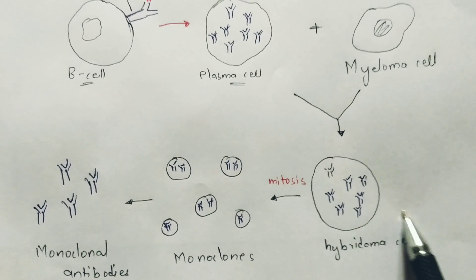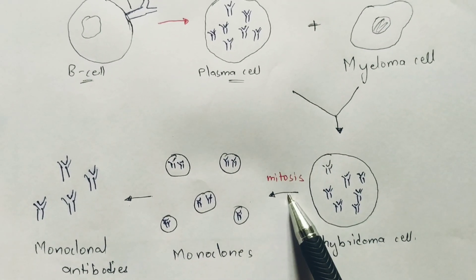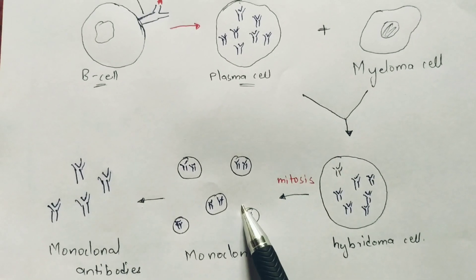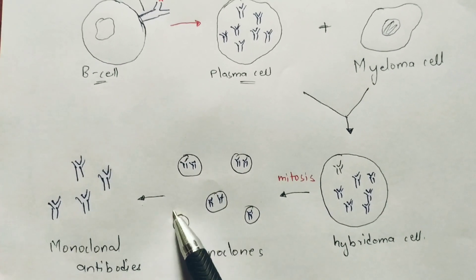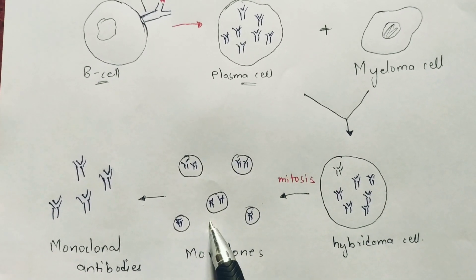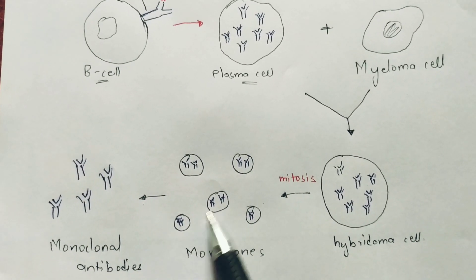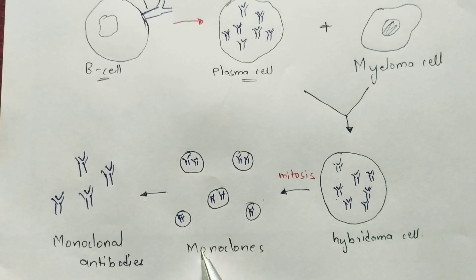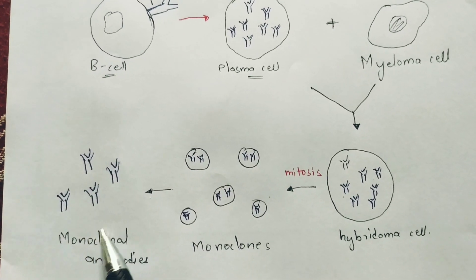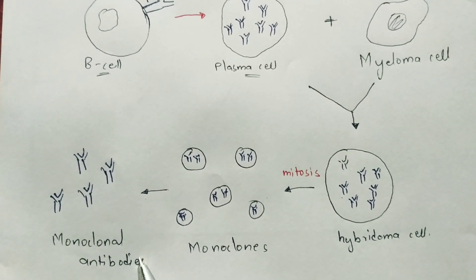This plasma cell which consists of antibodies will get combined with myeloma cell to form hybridoma cell. This hybridoma cell undergoes mitotic division, and equal/similar structures of its daughter individuals will be formed. Many clones have been formed from this single hybridoma cell. Since all are formed from a single individual of hybridoma cell, it is said to be monoclones. The antibodies which are present in these monoclones are said to be monoclonal antibodies. Extraction of these antibodies takes place from the monoclones.